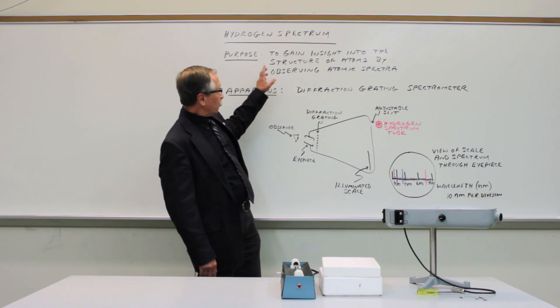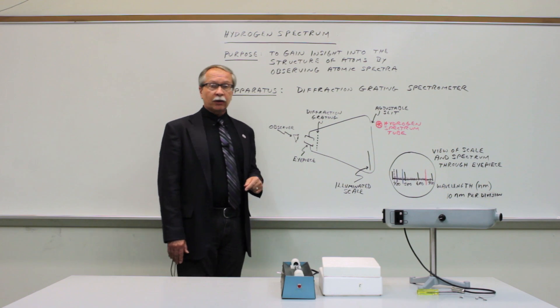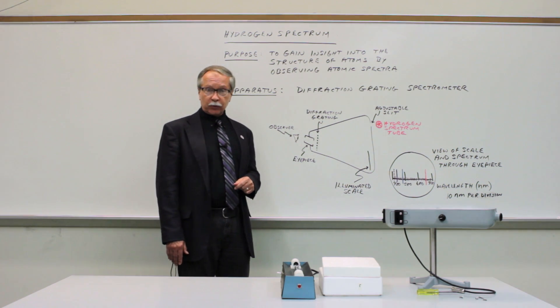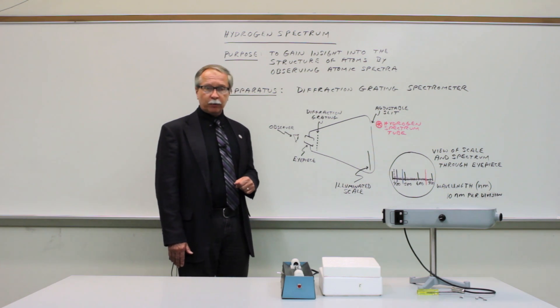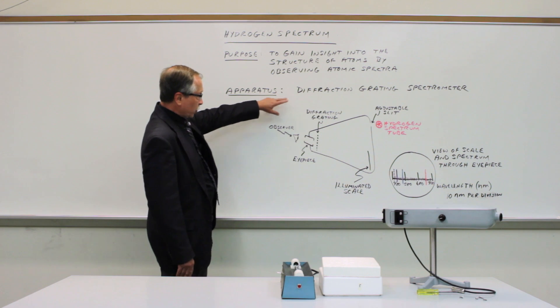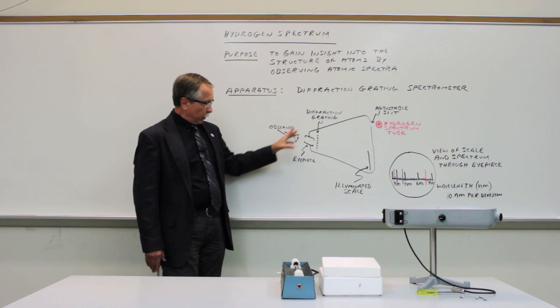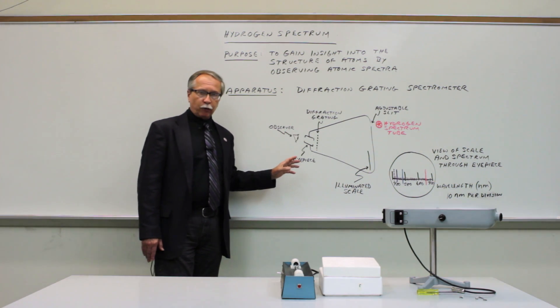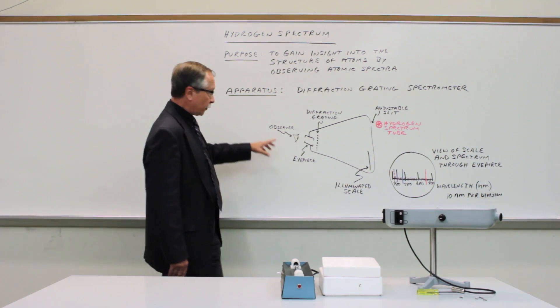The objective of this experiment is to help you gain some insight into the structure of atoms by measuring and analyzing the spectrum of hydrogen, the simplest atom in the periodic table. The apparatus is also fairly simple. We'll be using a diffraction grating spectrometer. And I've sketched a schematic diagram of the apparatus here. We'll show you the details of the instrument itself in just a few minutes.